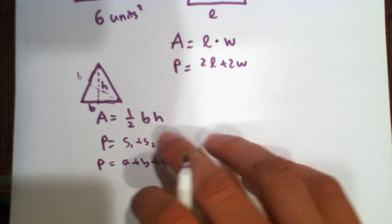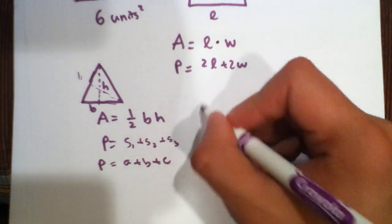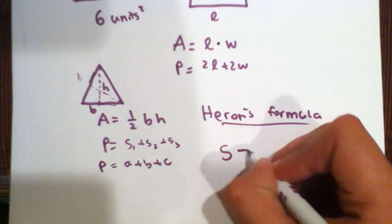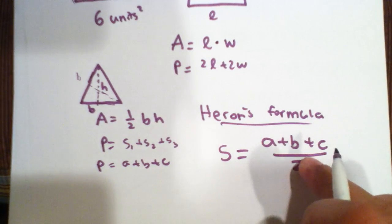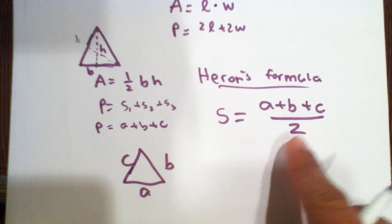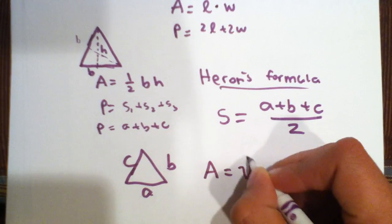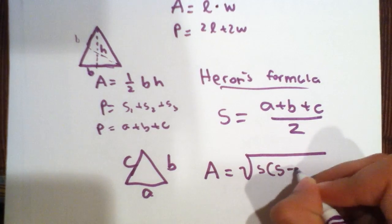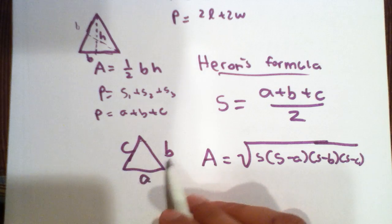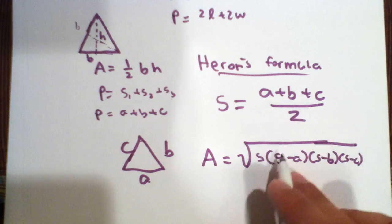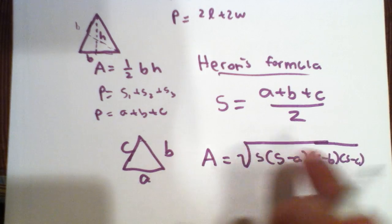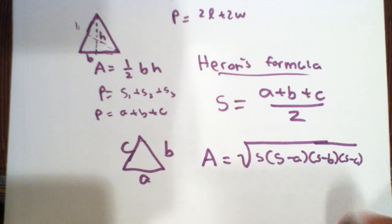Now, there is one more formula for finding the area of a triangle. It's called Heron's formula. This formula states that if S is equal to A plus B plus C over 2, which is half the perimeter of triangle ABC, then the area of the triangle is equal to the square root of S times S minus A, S minus B, S minus C. This is a very helpful formula when you have the values for all the sides of a triangle. You just take half of the perimeter, multiply it by the half of the perimeter minus one side, half of the perimeter minus another side, and do that again for the third side.